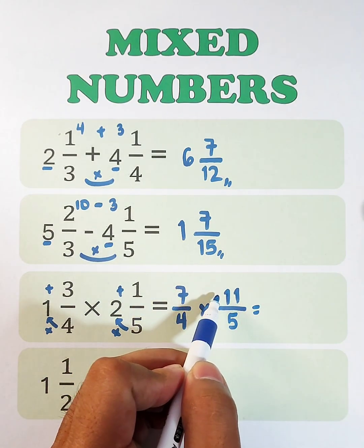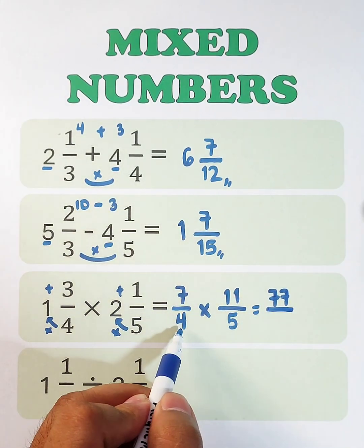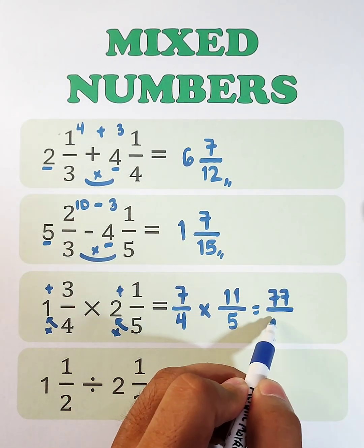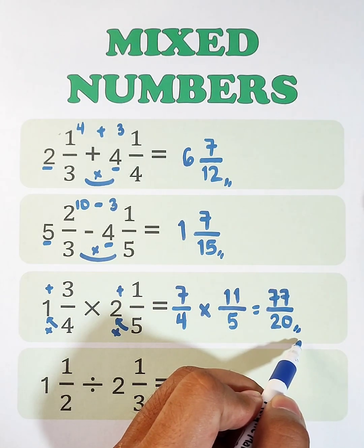7 times 11, that would be 77, over 4 times 5, that is 20. And the answer is 77 over 20.